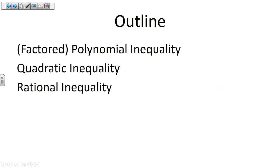Our outline for this video: we're going to start with a factored polynomial inequality — and the fact that it comes to us factored is nice. We're going to take a look at a quadratic inequality, which is just a special type of polynomial that's not going to be factored for us. And then we're going to end by taking a look at a rational inequality.